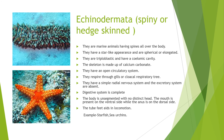The body is unsegmented with no distinct head — the main point is that Echinodermata animals do not have a head. The mouth is present on the ventral side and the anus is on the dorsal side — opposite sides. Tube feet aid in locomotion, allowing them to move from one place to another. Examples are starfish, sea urchin, and sea cucumber.